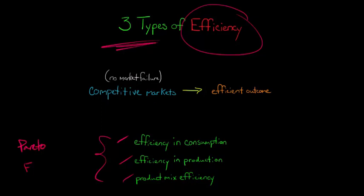With Pareto efficiency, what we're basically saying is when we're at an allocation that is Pareto efficient, there's no way we could make somebody in the economy better off without making at least one person worse off.